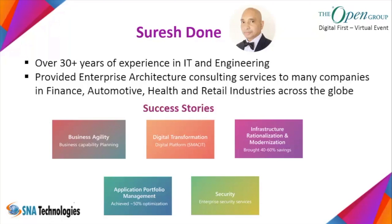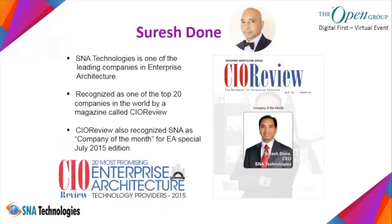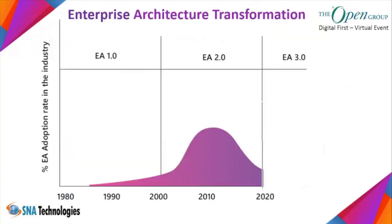We optimized infrastructure within organizations, which brought about 40 to 60 percent savings. We also did application portfolio management, which achieved about 50 percent optimization in some organizations. We provided security services at an enterprise level. We've been recognized by CIO Review magazine as a top 20 company across the world providing enterprise architecture services, and were recognized as company of the month in the July 2015 edition.